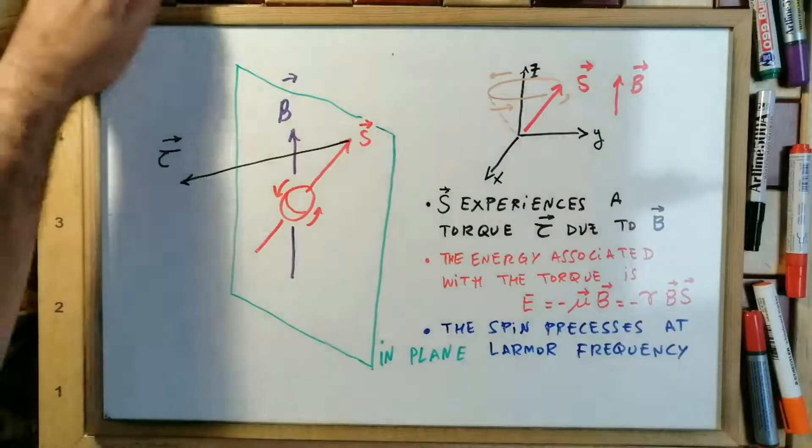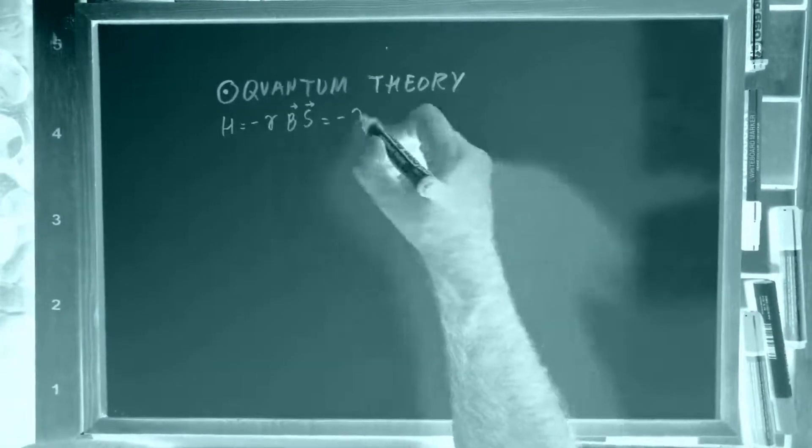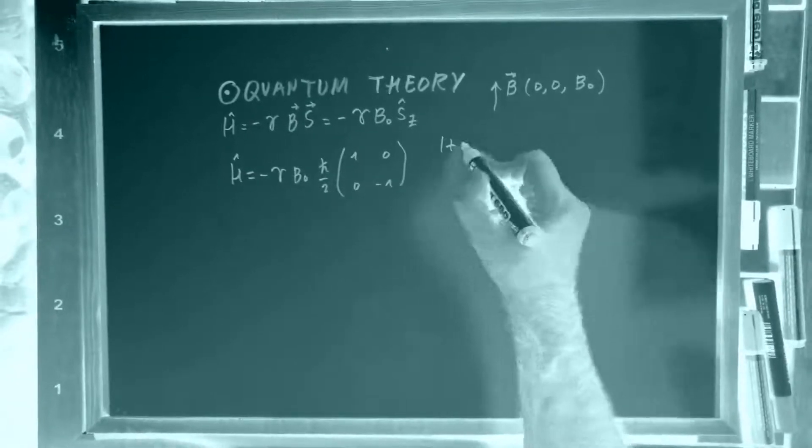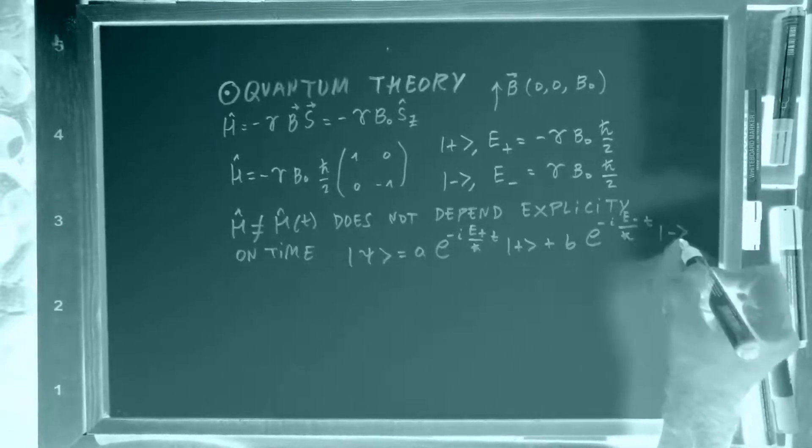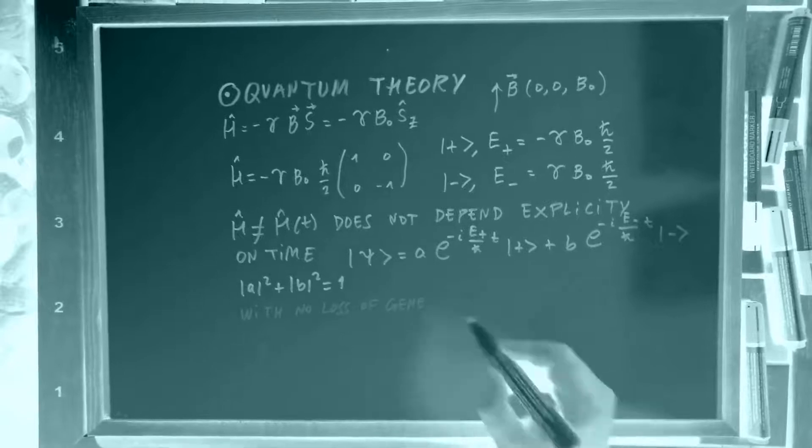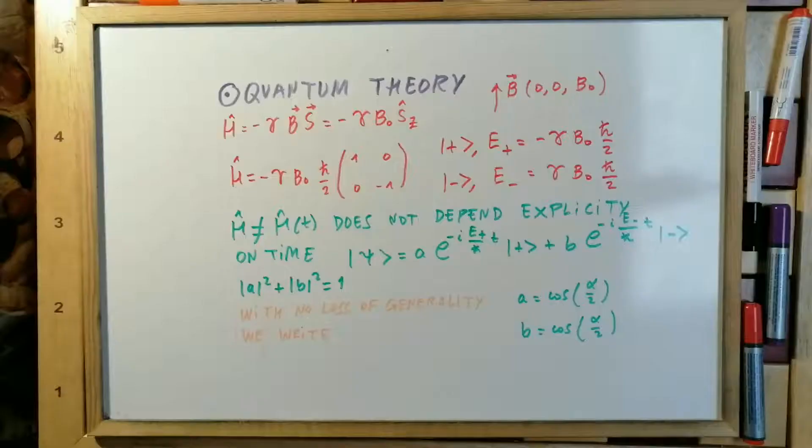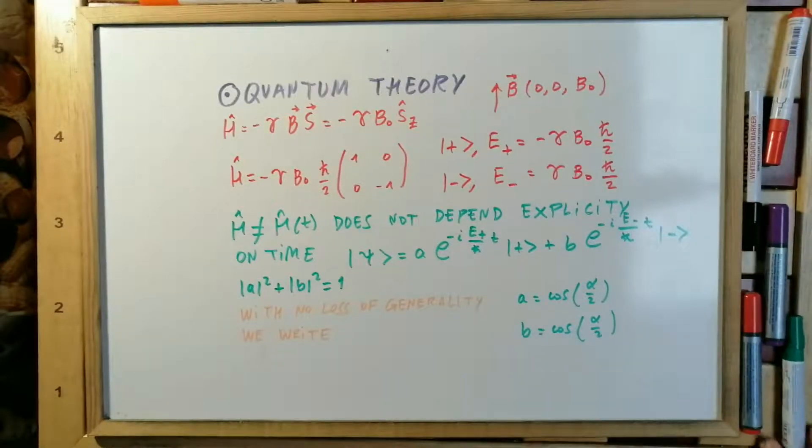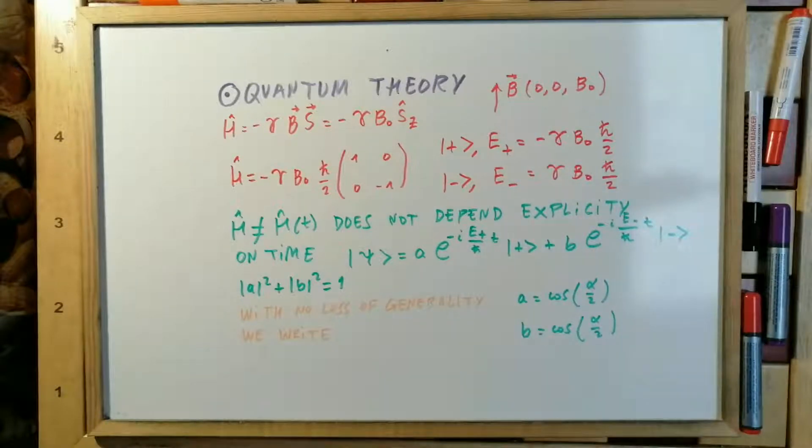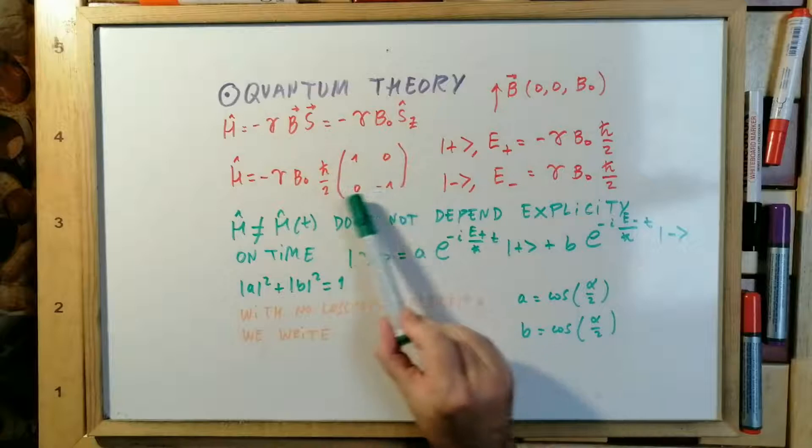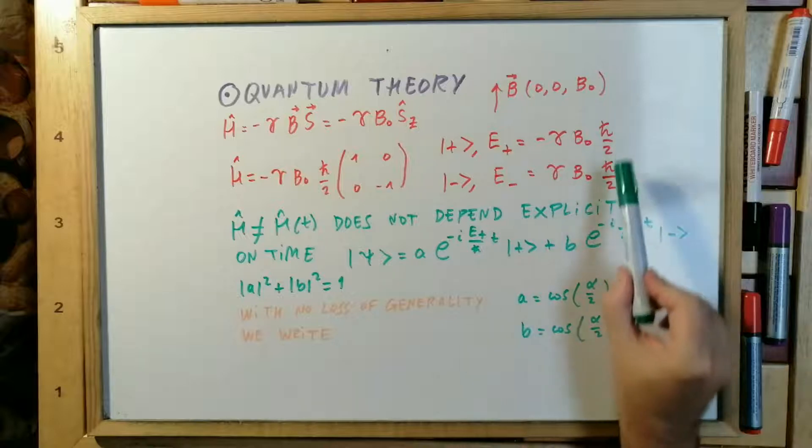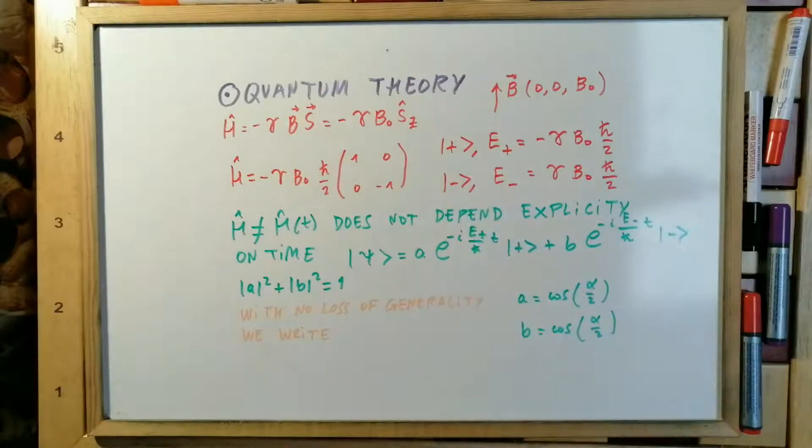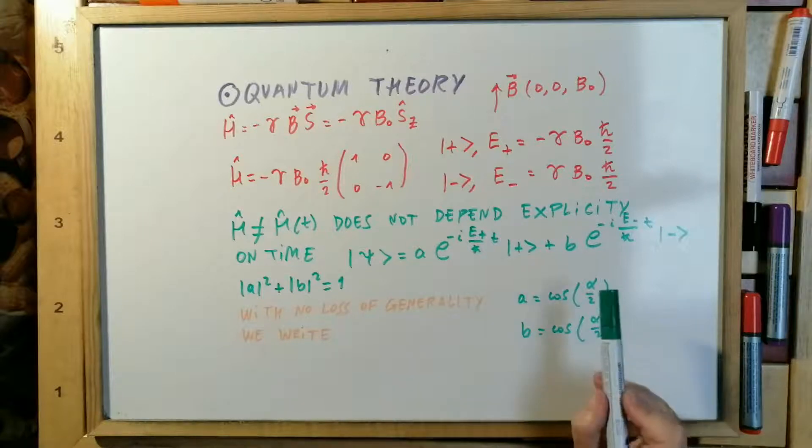Now we see the quantum theory. In the quantum theory, we have the magnetic field along the z direction. Here we have the Hamiltonian with the Pauli matrix in the z direction, and both eigenvalues and eigenvectors. The Hamiltonian does not depend explicitly on time.